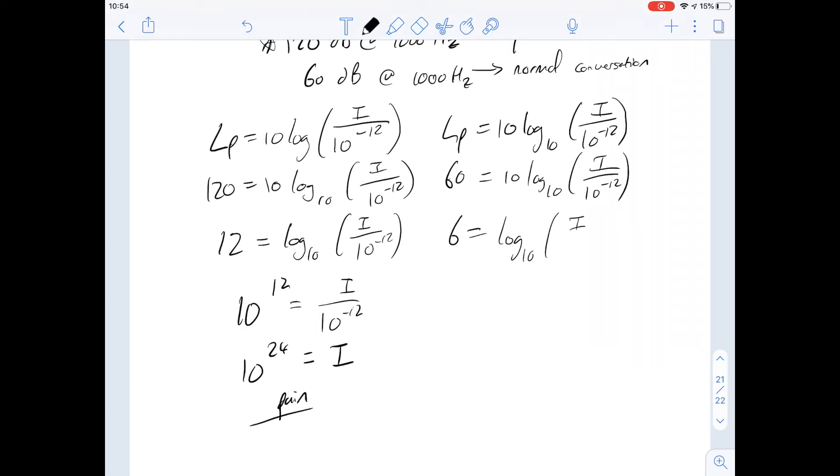We know that this is going to be 60 equals 10 log 10i over 10 to the minus 12. If we divide both sides by 10, then we get 6 equals log 10 over i over 10 to the minus 12.